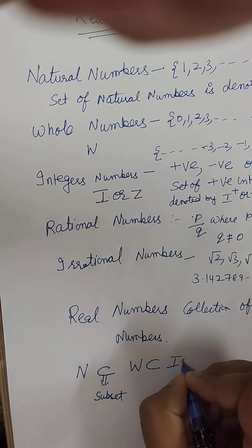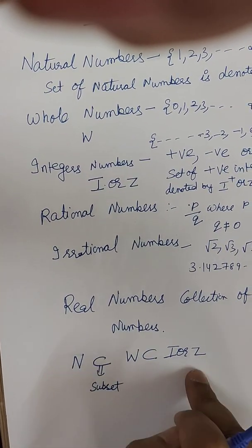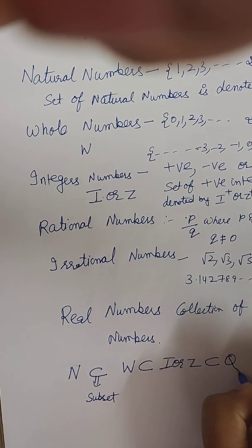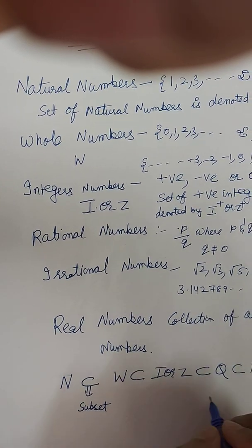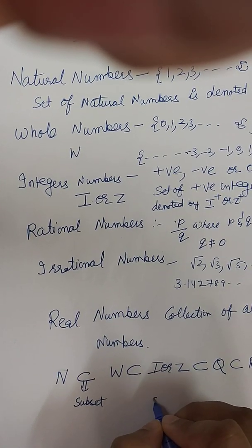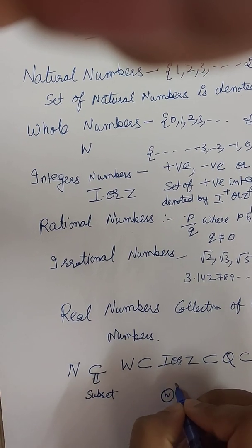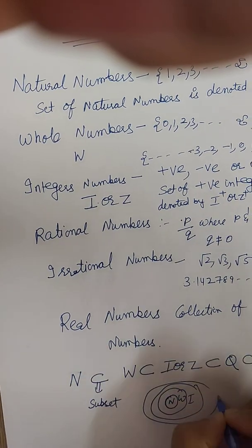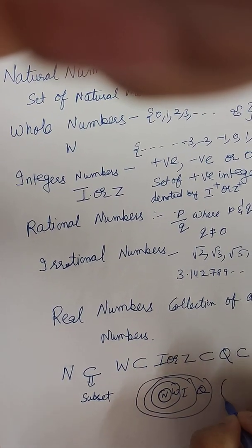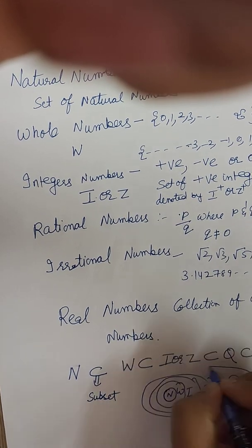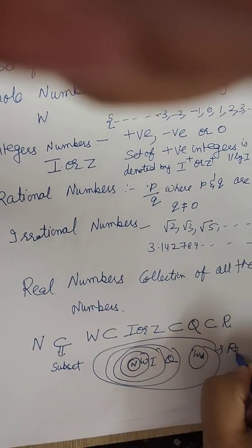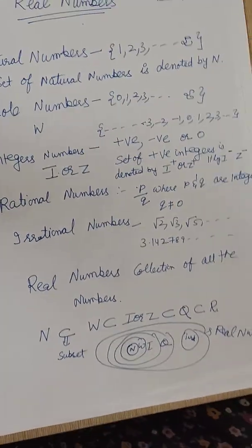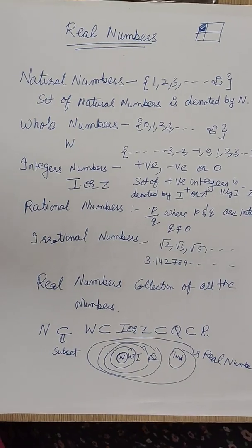So after it is I or Z, because all are 0 and positive, but what is extra? Negative. After then rational number. A set of rational numbers is denoted by Q. After then real numbers. Or I can represent this with the diagram. Natural number, then whole number, then integers, then rational numbers, and here it is a separate of irrational numbers. And the complete combination is of real numbers. So now you understand what are real numbers. So these are all the real numbers. That's it.